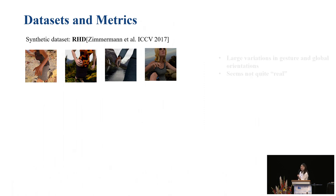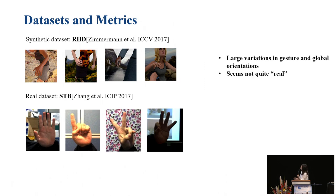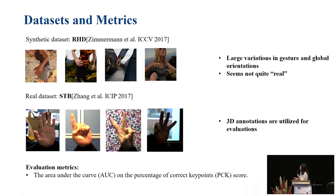For dataset and evaluation metrics, we use two datasets: the synthetic dataset from ICCV 2017, a rendered dataset with large variations in gesture and global orientations but not quite real; and for real images, a dataset from ICIP 2017 called STB. The 3D annotations are used for evaluation, not training. For evaluation metrics, we use the AUC curve of the PCK score. The higher the curve, the better the performance.